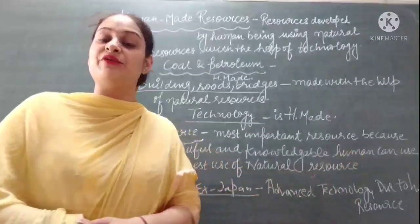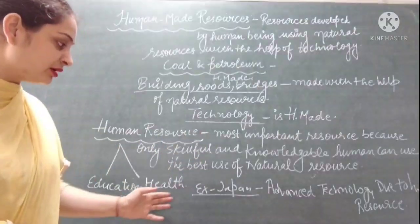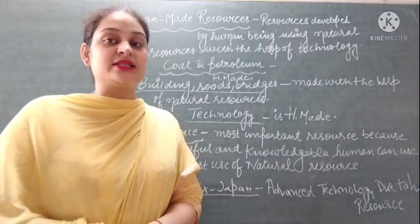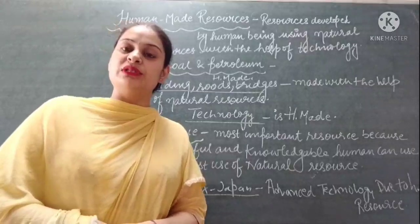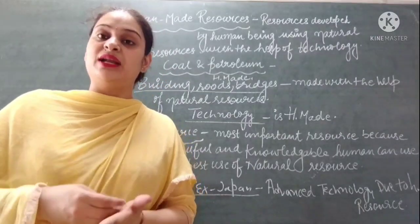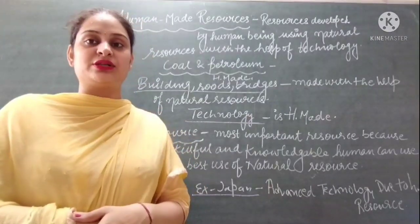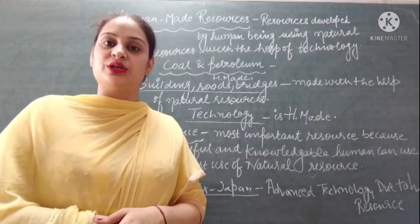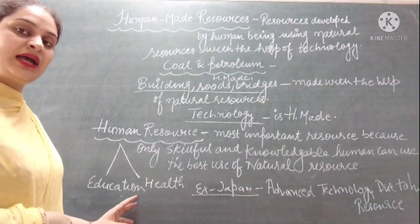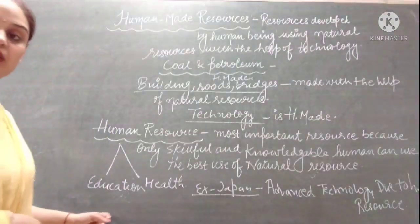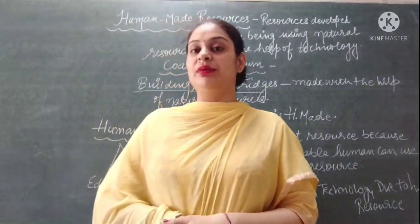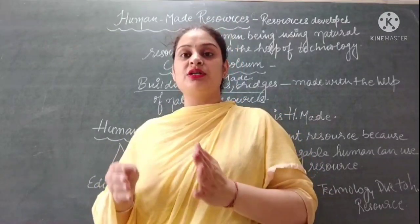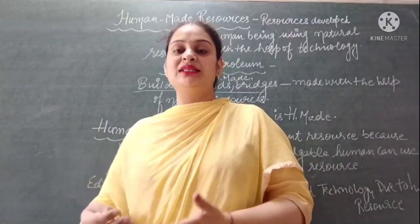It is due to the knowledge and skill of humans that they are able to use natural resources for different purposes and make life easier. For example, Japan has advanced technology because of its human resources — people there have a lot of skill and knowledge, which allows them to convert natural resources into tremendous results. The two things that make an ordinary person a human resource are education and health.